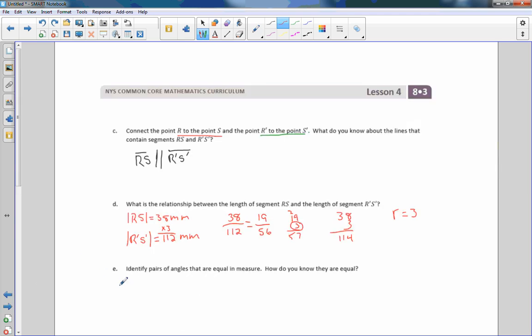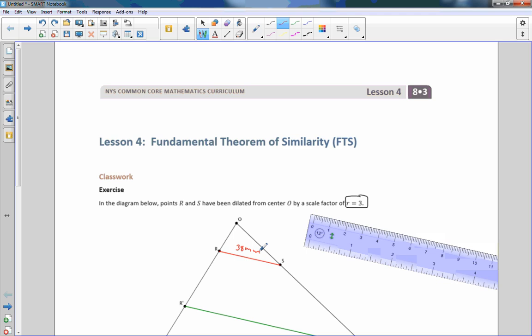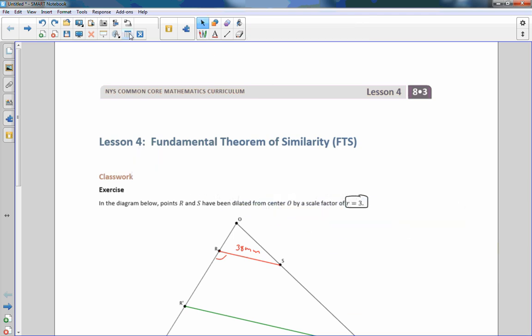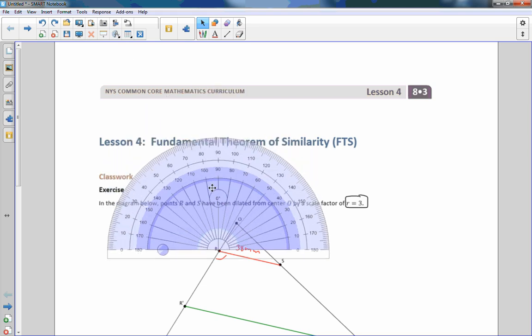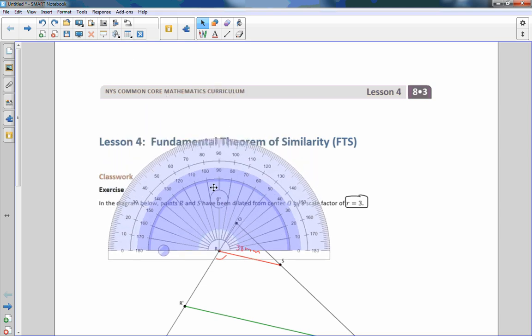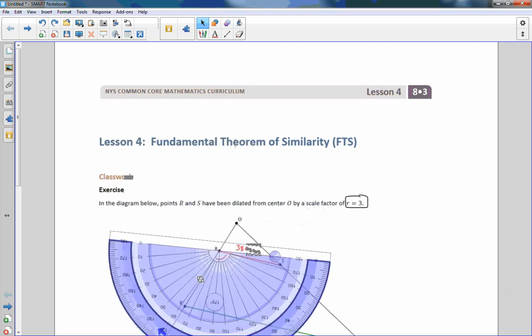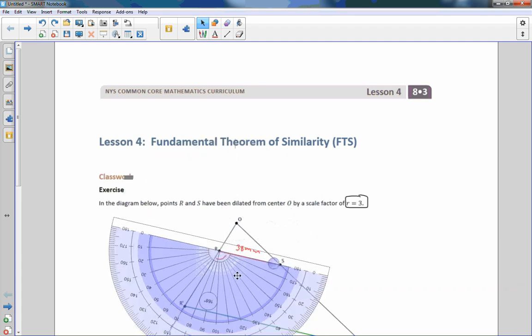So I can measure that. So I can say the measure of angle SRR prime equals, so SRR prime is right here, and I'm going to measure that with a protractor. So if I bring my protractor down and put it right on there, rotate it around so that that is right on 180 or 0, which is right about there.